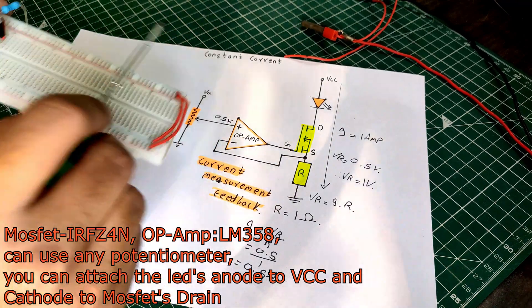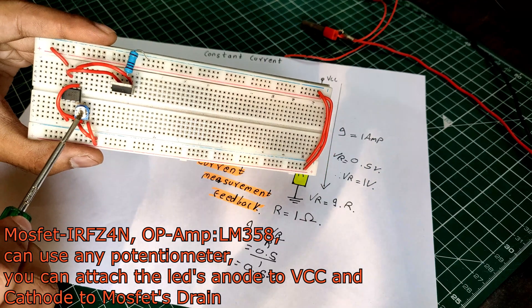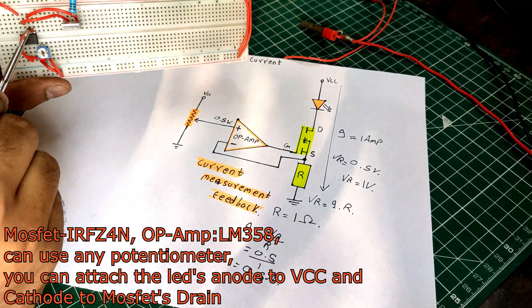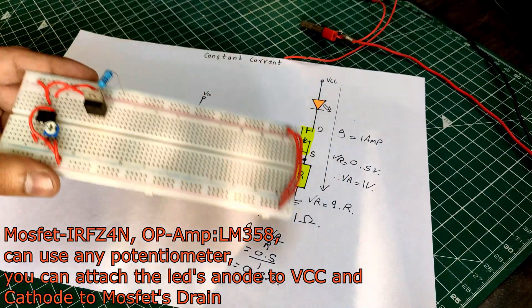For the op-amp, I will be using an LM358 IC. Then for the potentiometer, I will be using a small trimmer. And then I made all the connections according to the circuit diagram.